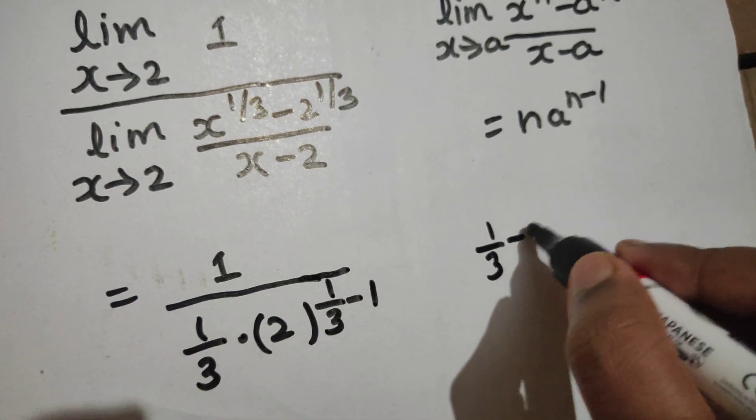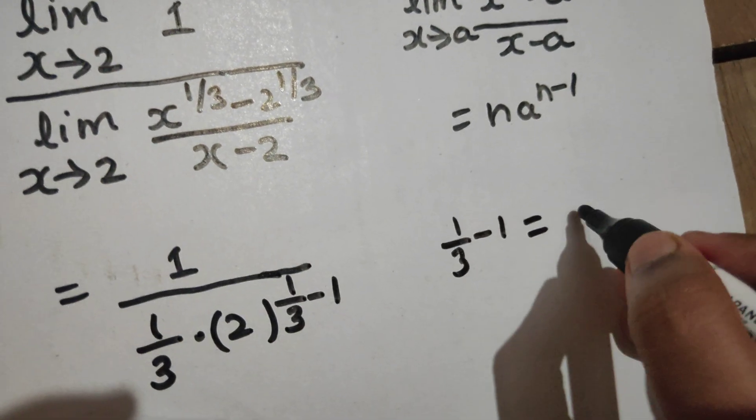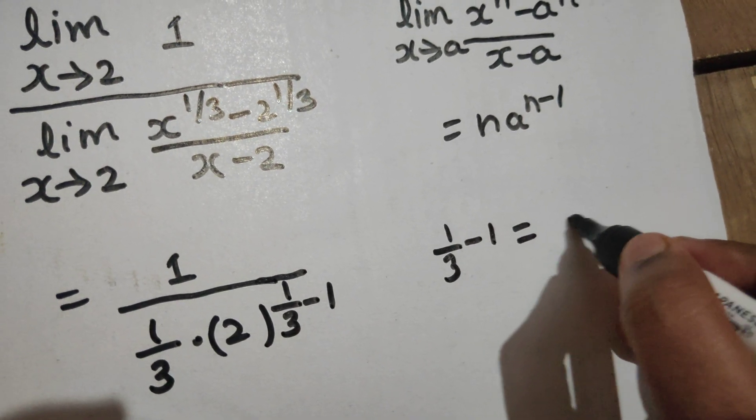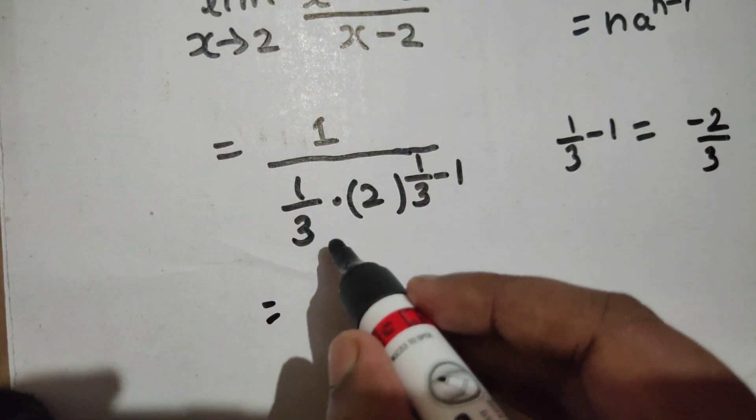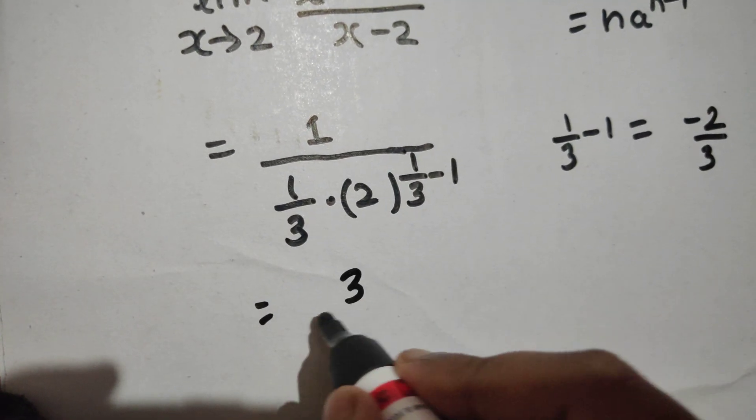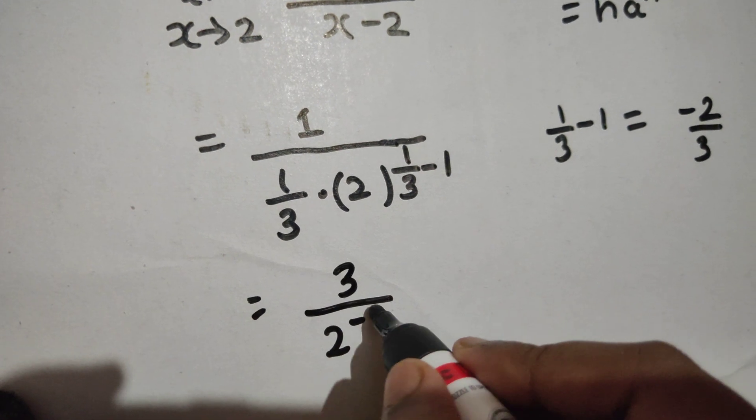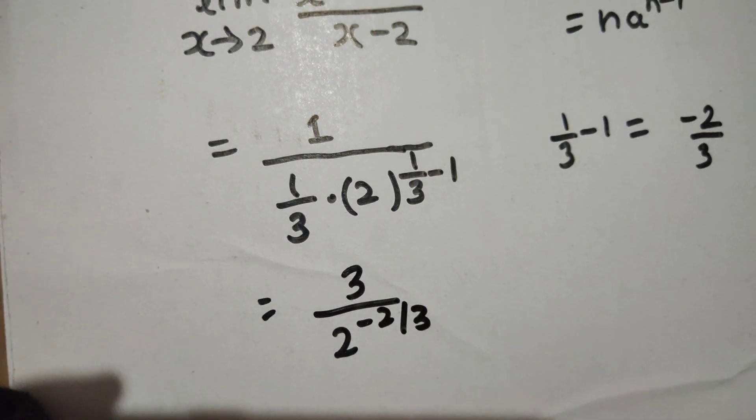Now 1/3 minus 1, ask a child, he will tell you 1 minus 3, so minus 2/3 is there. So this 3 can go up and 2 power minus 2/3, fine.